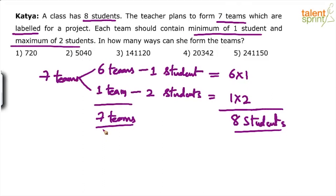Now, let us first find out the number of ways in which we can choose the two students who are going to be together. Forget about everything else — focus and find out in how many ways can I choose two students out of these eight students. And remember, I had asked you to focus on the word 'labeled.' Whenever we form a team or a committee, it comes under combination — it is a selection problem, not an arrangement problem.